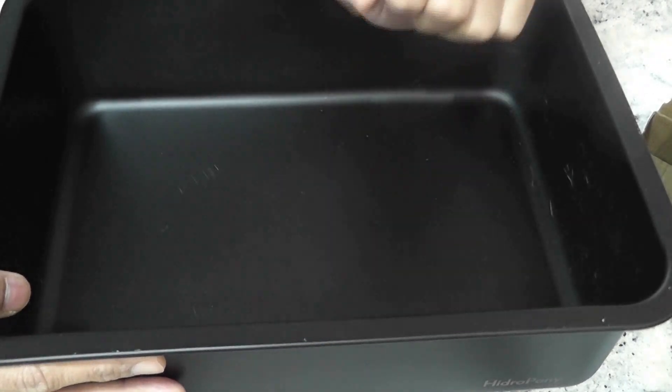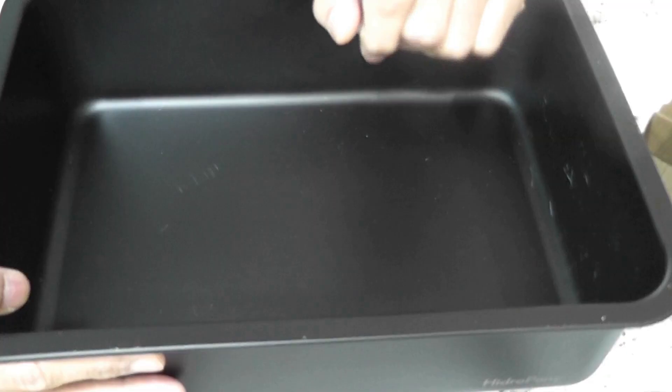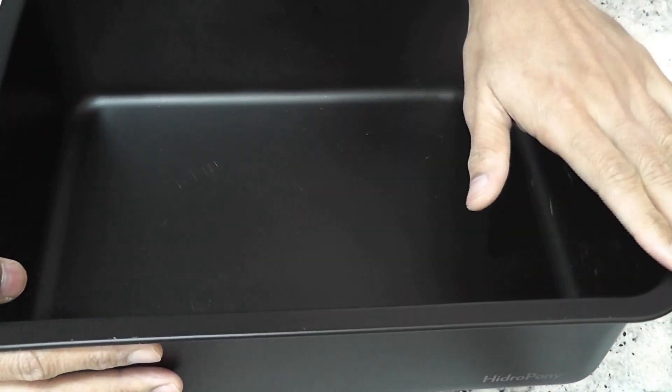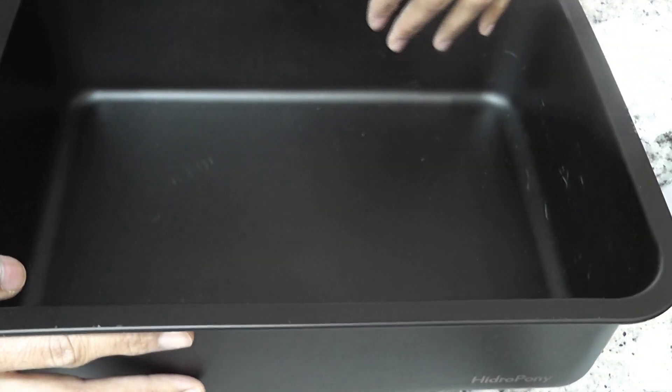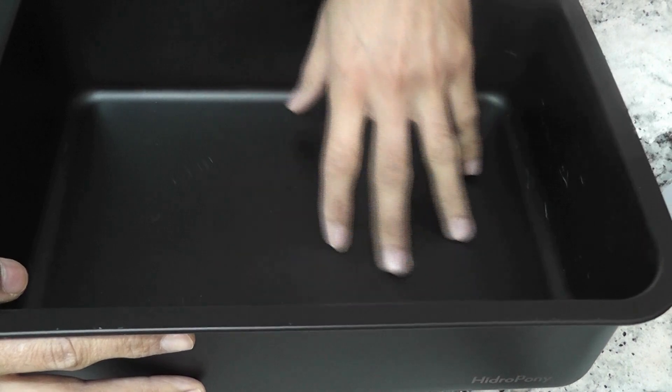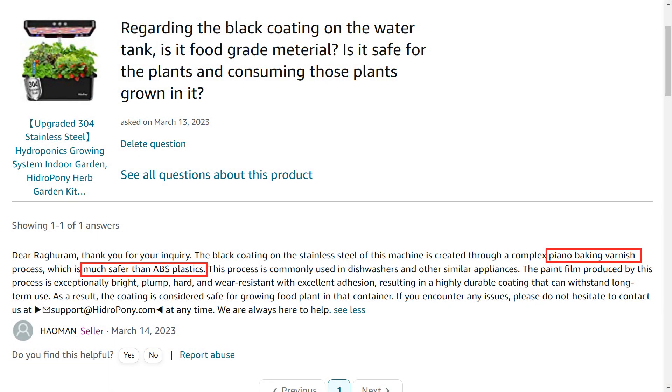It has a black coating on the bowl, and if you wonder what it is, I had the same question and posted it. Here is the answer from the seller: the black coating on the stainless steel of this machine is created through a complex piano baking varnish process, which is much safer than ABS plastics. This is pretty convincing and I am comfortable with this answer.